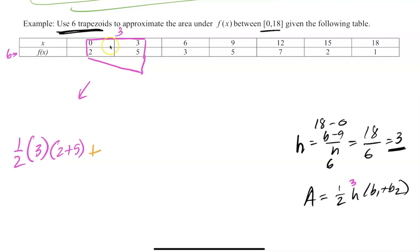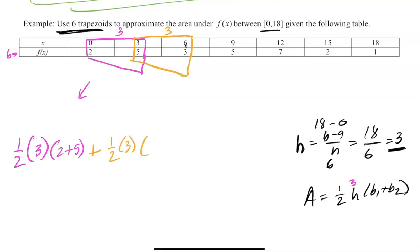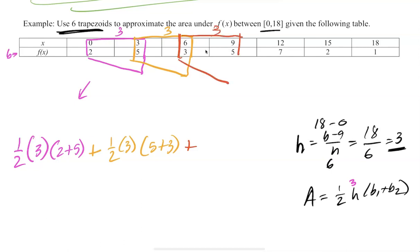Trapezoid 2 goes from x = 3 to x = 6: (1/2)(3)(5 + 3). Trapezoid 3 goes from x = 6 to x = 9: (1/2)(3)(3 + 5). Trapezoid 4 goes from x = 9 to x = 12: (1/2)(3)(5 + 7). We're using y-values, not x-values, for the bases.